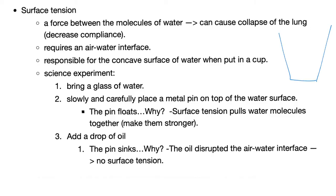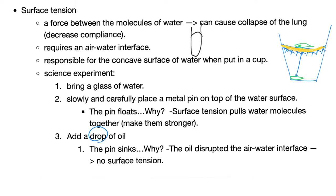When you put water in a glass, water tends to form a concave surface — unlike mercury, which forms a convex surface. Why is water like this? Thanks to surface tension, the force between those molecules of water. Here's the experiment: bring a glass of water, slowly put a metal pin on top, and it stays there because of surface tension. How do you break that surface tension and make the pin sink? Easy — add a drop of oil. The oil comes between the air and water, creating a barrier, reducing surface tension, and the pin sinks. This drop of oil is the surfactant in your lung.